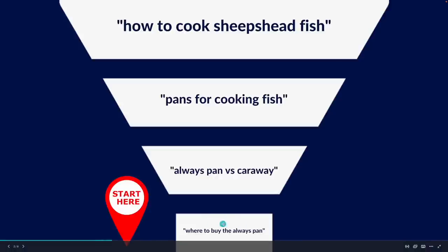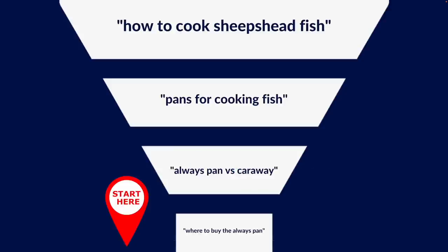From the transactional keyword we go further up the funnel. Now we're looking at 'Always Pan versus Caraway,' which has comparison intent. These are really valuable because if you can rank for this, you can steer that searcher away from the competitor and towards your product. Then we go further up the funnel into more investigative keywords — like 'pans for cooking fish' or 'best pans for cooking fish.'